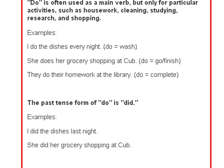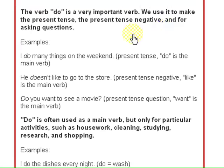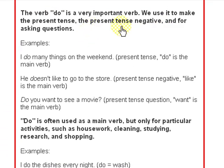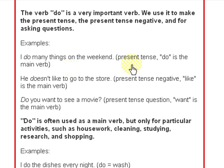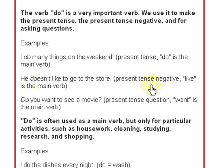The verb 'do' is a very important verb. We use it to make the present tense, the present tense negative, and for asking questions. For example: 'I do many things on the weekend' — that's the present tense, and 'do' is the main verb meaning an action. 'He doesn't like to go to the store' — present tense negative, where 'like' is the main verb and 'do not' is the auxiliary verb. 'Do you want to see a movie?' — present tense question, where 'want' is the main verb.